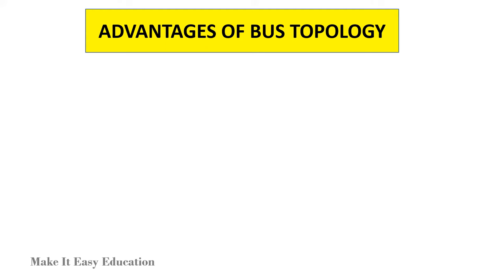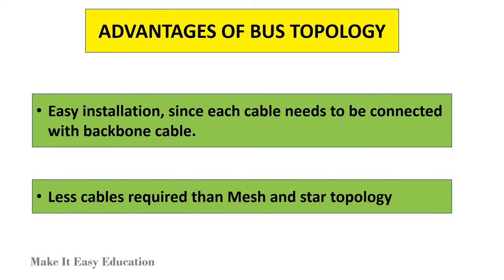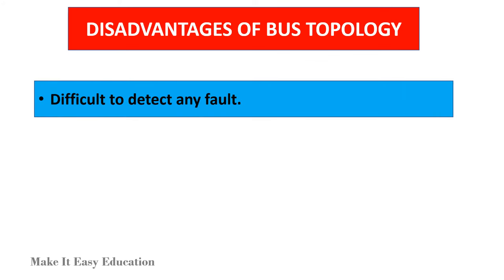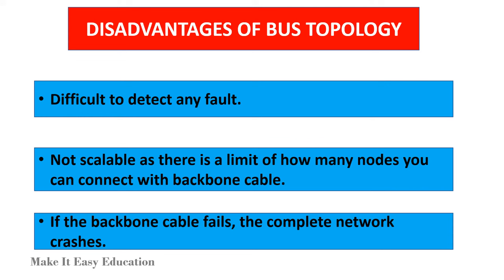Advantages of bus topology: Easy installation, since each cable needs to be connected with the backbone cable. Less cables required than mesh and star topology. Disadvantages of bus topology: Difficult to detect any fault. Not scalable, as there is a limit on how many nodes you can connect to the backbone cable. If the backbone cable fails, the complete network crashes.